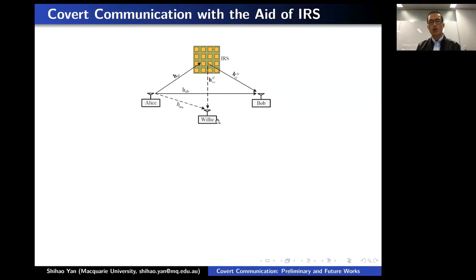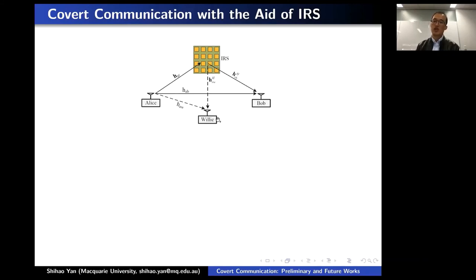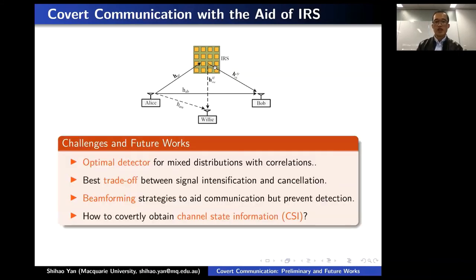A simple conclusion I can demonstrate is that even with a single-antenna Alice, Willie, and Bob, if we have multiple antennas at the IRS, we can still achieve perfect covertness — meaning we can completely remove the signal at Willie, because we get a mixed signal from Alice and also from the IRS. There are some conditions, and this work will be coming out soon.